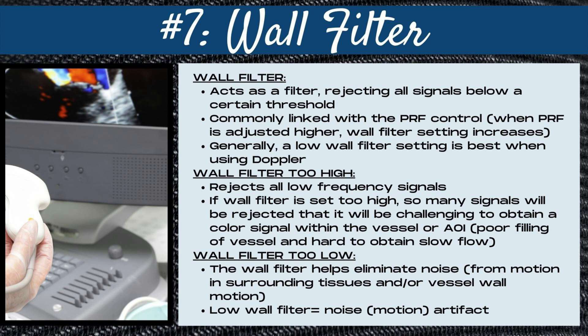The next setting in our color Doppler optimization checklist is the wall filter, which acts as a filter — it rejects all signals below a certain threshold, and this is commonly linked with the PRF control. When the PRF is adjusted higher, the wall filter setting also increases. Generally, a low wall filter setting is best when using Doppler. When the wall filter is too high, it rejects all low frequency signals, making it challenging to obtain a color signal within the vessel and doubly hard to obtain slow flow. When the wall filter is set too low, you'll have more noise or motion artifact, as the wall filter helps eliminate noise from motion in surrounding tissues and from the motion of the vessel walls.